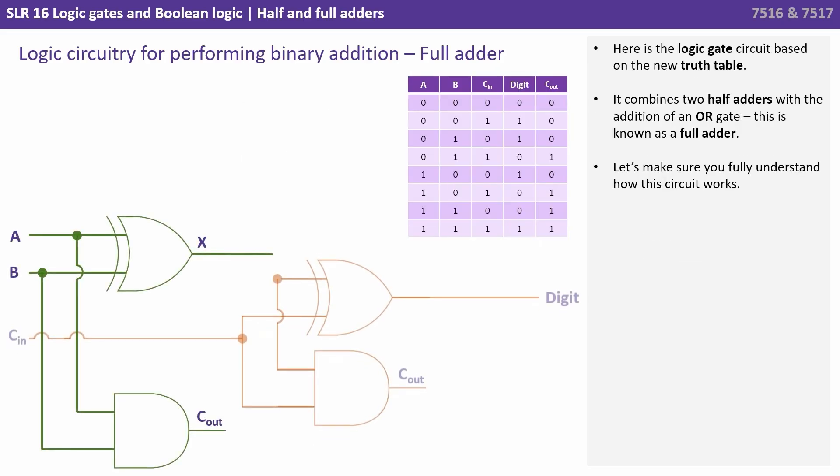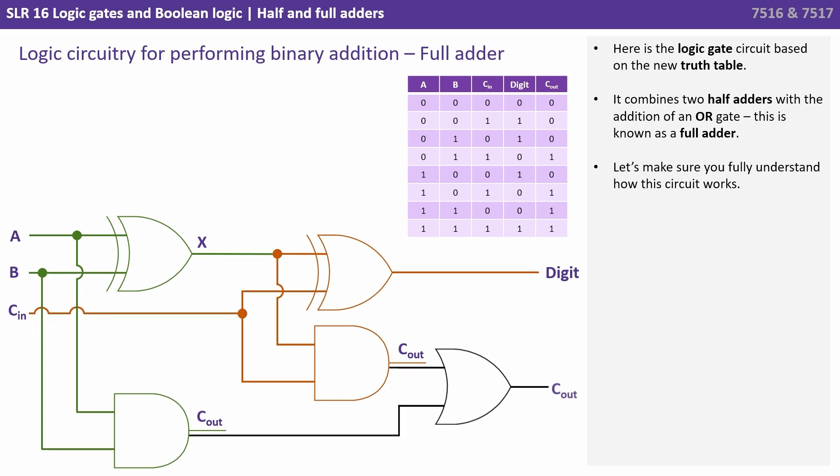Here is the logic gate circuit based on the new truth table. It combines two half adders with the addition of an OR gate. And what we're looking at here is known as a full adder.